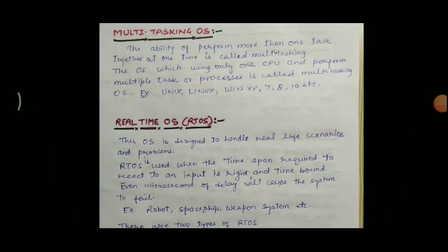The next type of operating system is the multi-tasking operating system. Multi-tasking means performing more than one task at the same time. For example, if we are typing something, surfing websites, and listening to songs all at once, we are performing multiple tasks at the same time — this happens because of the multi-tasking operating system. The OS which uses only one CPU and performs multiple tasks or processes is called a multi-tasking operating system. Examples are Linux, Unix, Windows XP, Windows 7, Windows 8, and Windows 10.